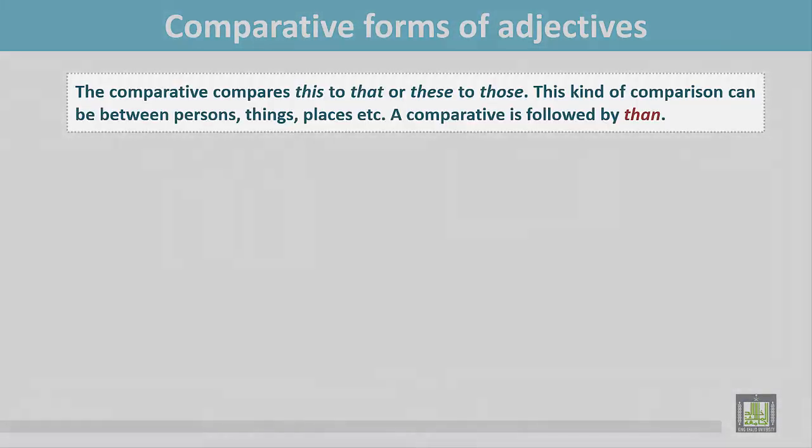The comparative compares this to that or these to those. This kind of comparison can be between persons, things, places, etc. A comparative is followed by than.